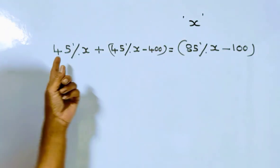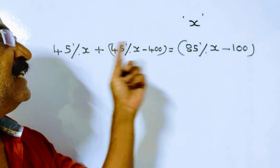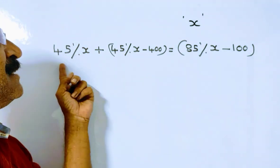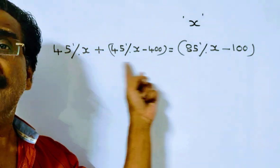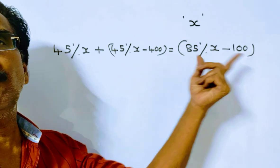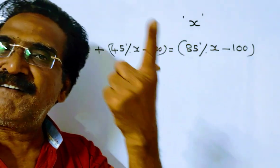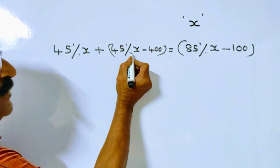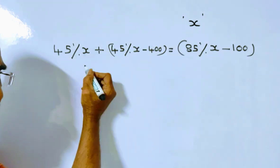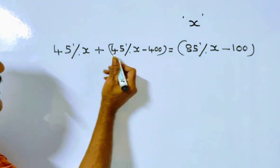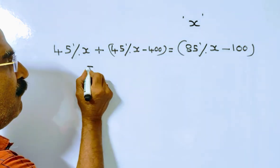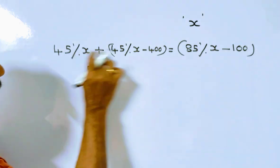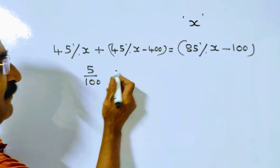So 45% of X plus (45% of X minus 400) must equal the total valid votes, 85% of X minus 100. This gives us 90% of X minus 85% of X, which is 5% of X, equal to 400 minus 100, which is 300.